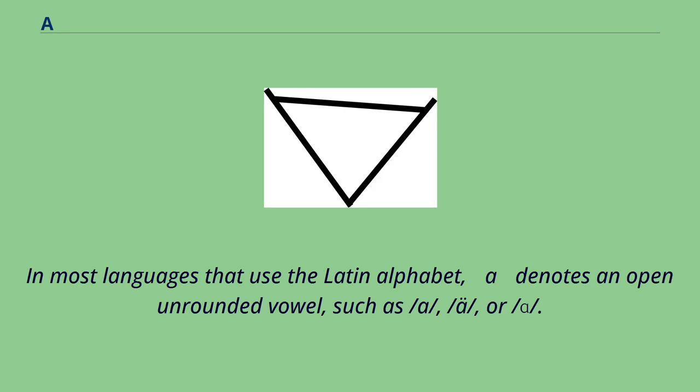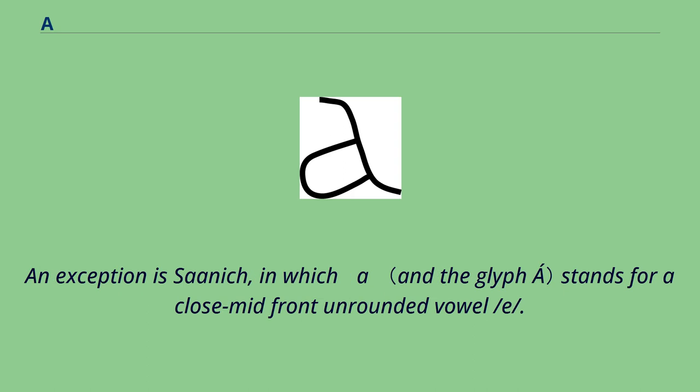In most languages that use the Latin alphabet, A denotes an open unrounded vowel, such as /a/, /ä/, or /ɑ/. An exception is Saanich, in which A stands for a close-mid front unrounded vowel /e/.